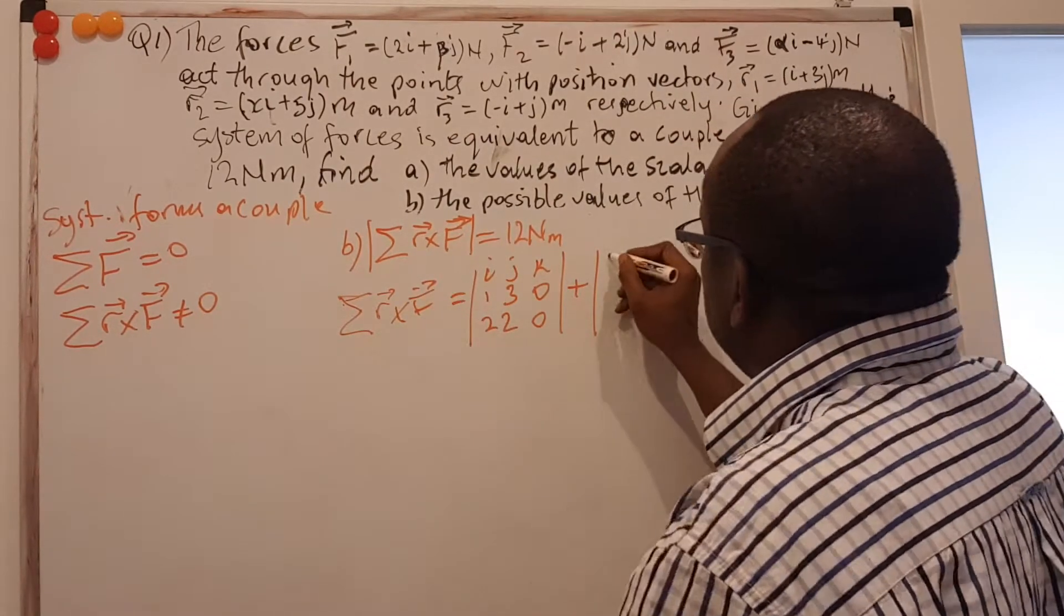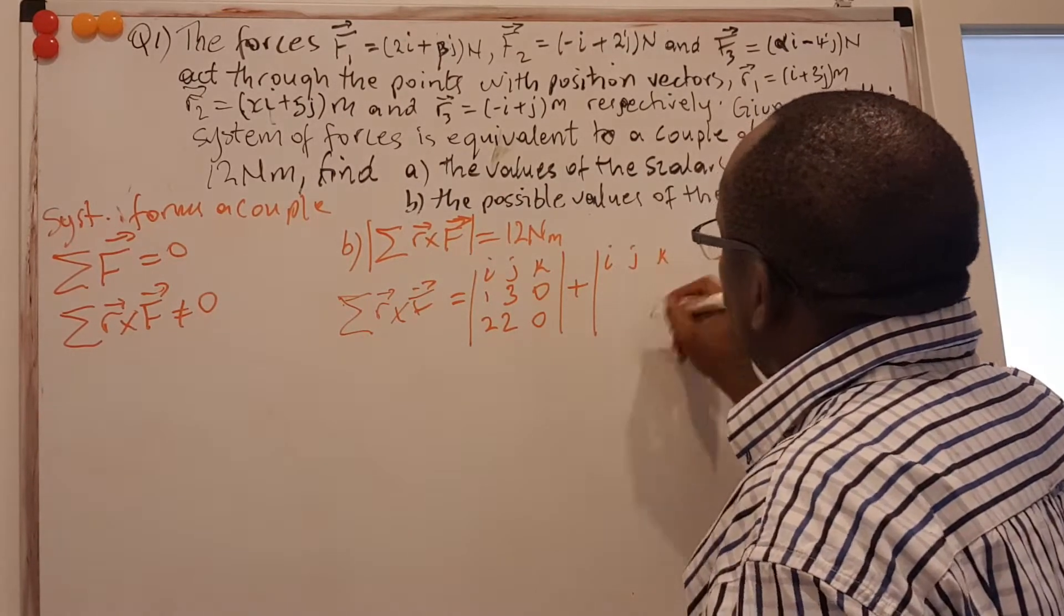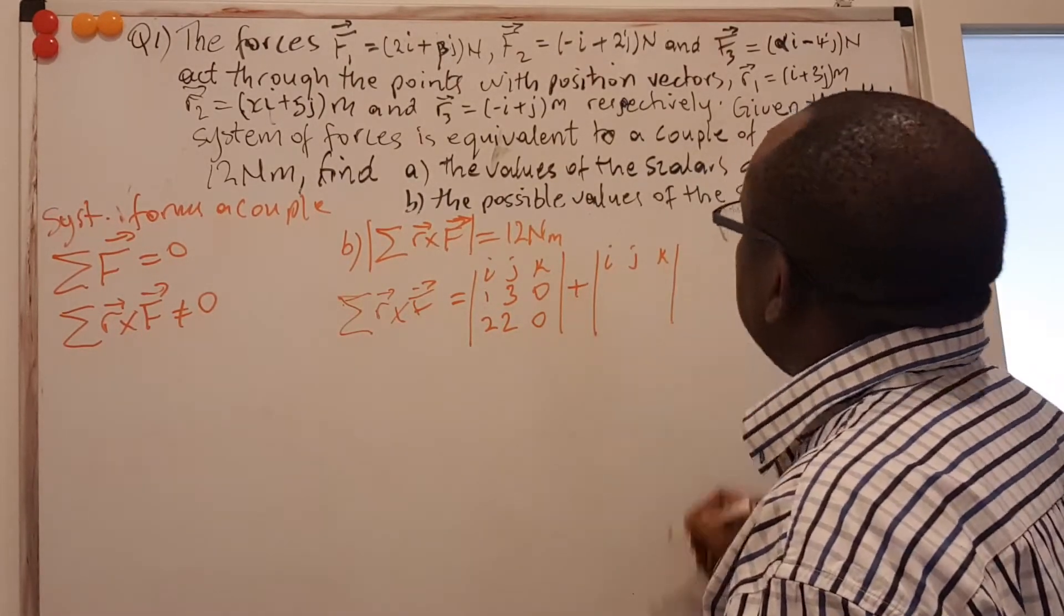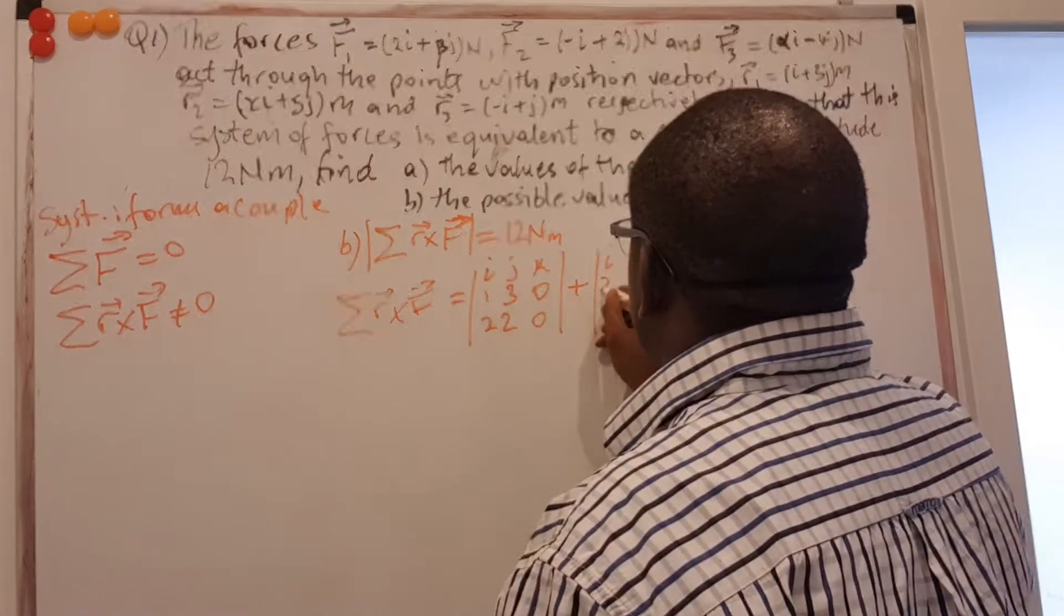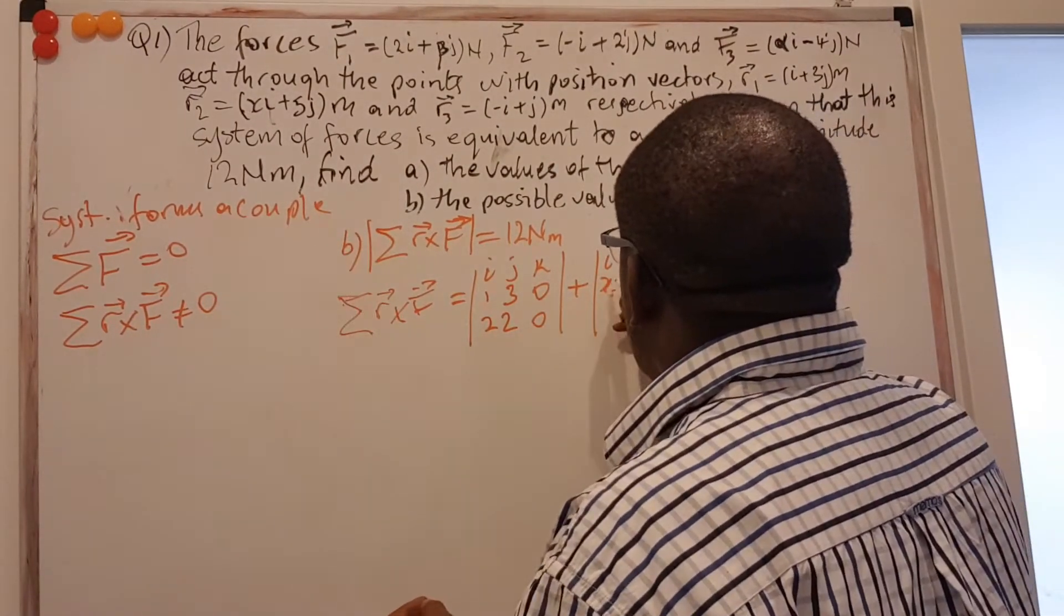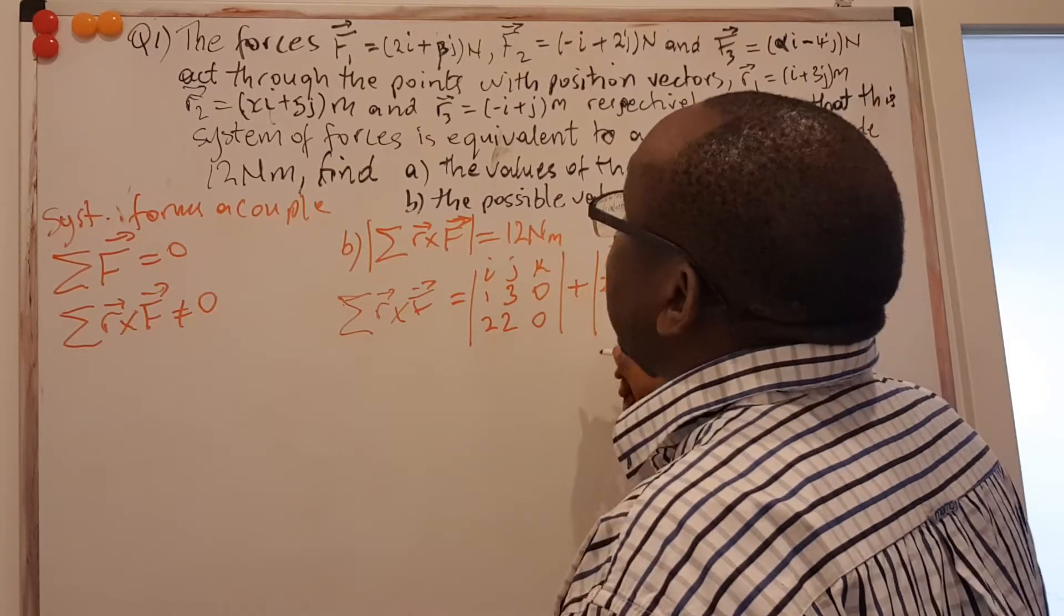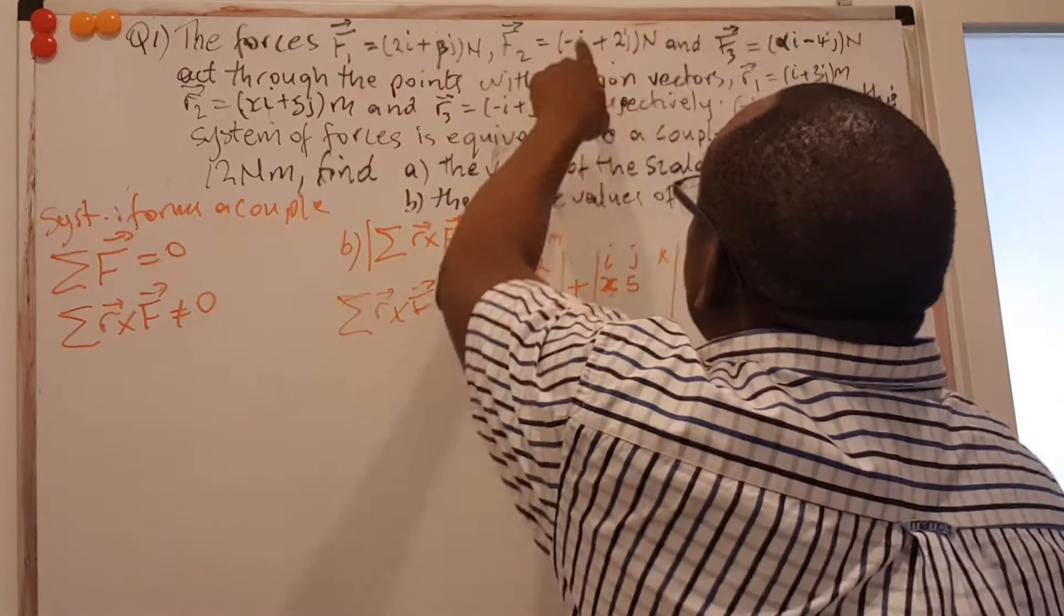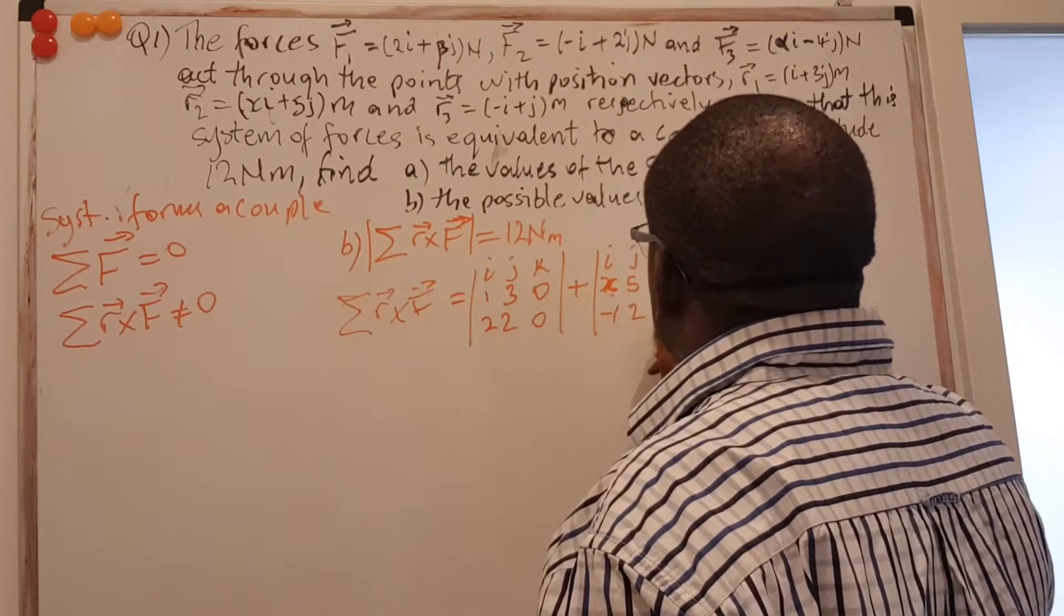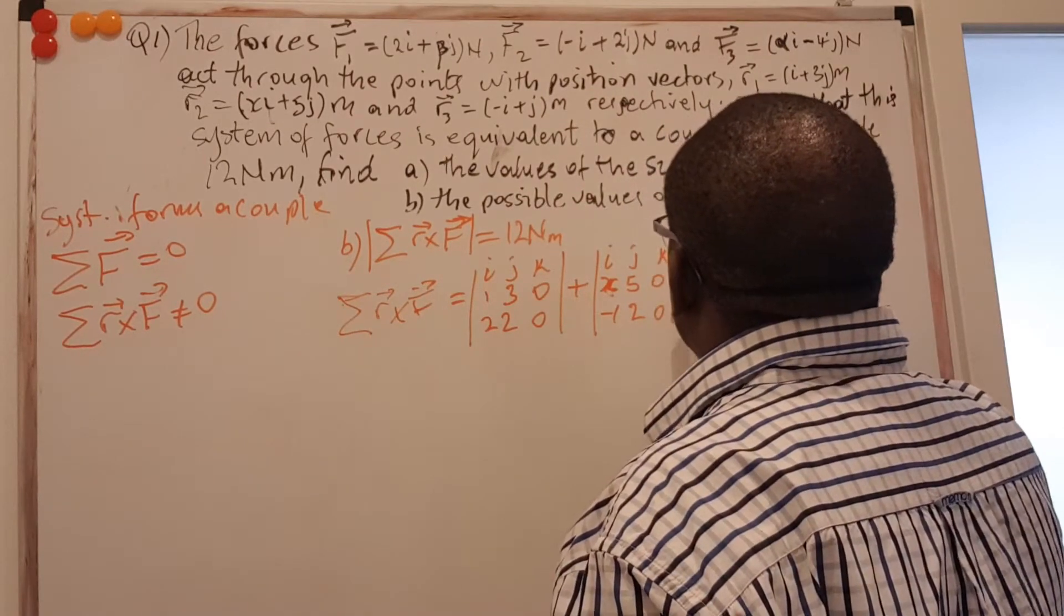Go to the next one. We start with our i, j, and k. So that it defines our vector at the end. And then we take this one R2. The X there, we don't know. We will look for it. That's why it stays here. X, 5, 0. And the force corresponds to that as -1, 2, 0. Plus.